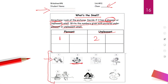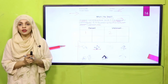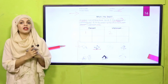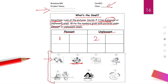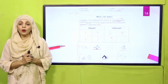Now pause the video and finish the rest of the worksheet. Let's recheck: number three is perfume - pleasant. Number four is rotten food - unpleasant. Garbage - unpleasant. Good food - pleasant. Fruits have a pleasant smell - pleasant. Quickly recheck your worksheet. I hope you have done it correctly.